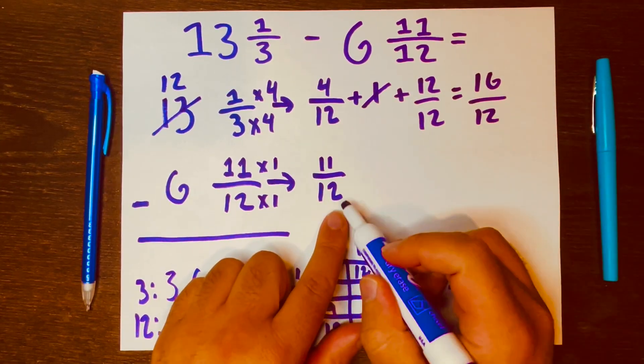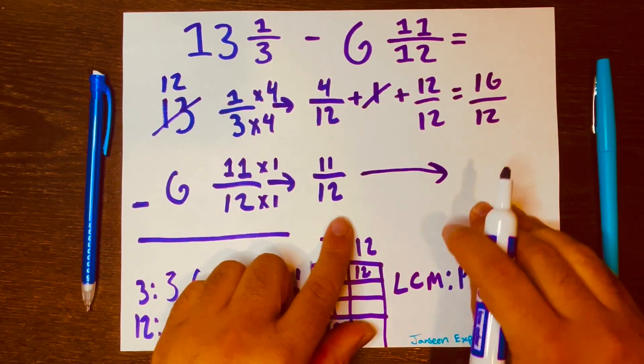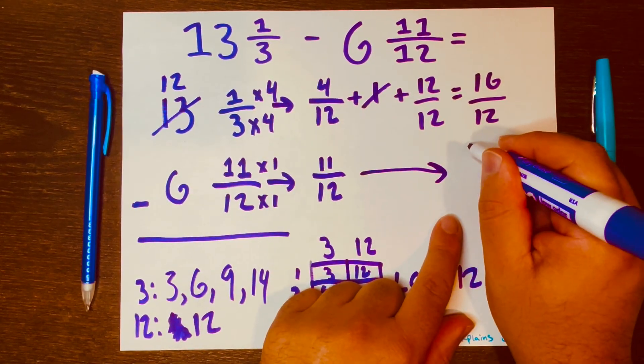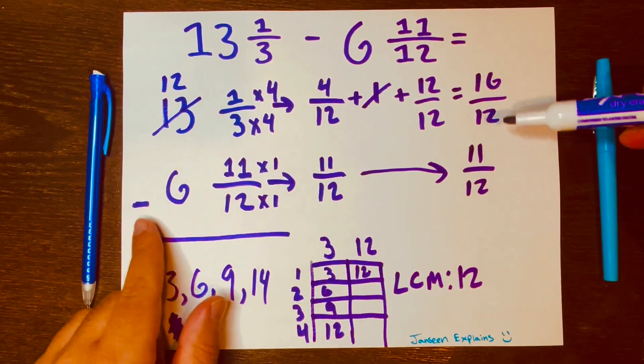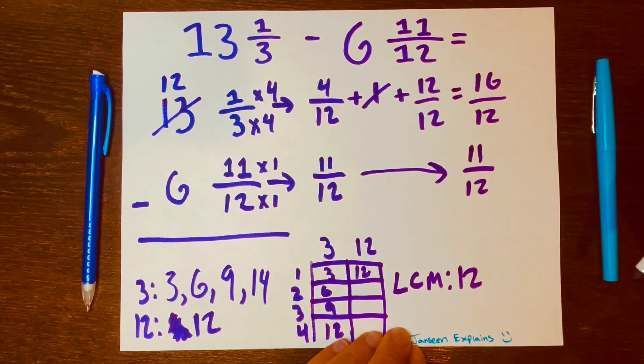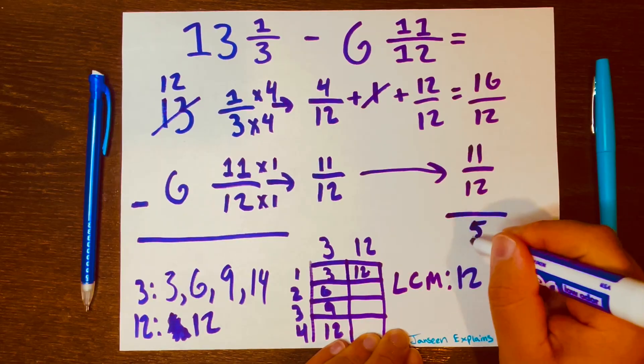Now we can subtract. So let's just move this fraction over here so we can see the subtraction. So 16 minus 11 is 5 over 12.